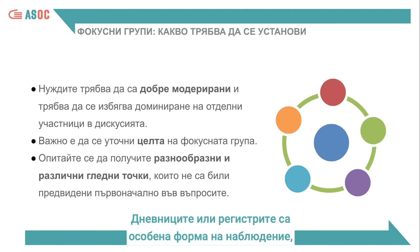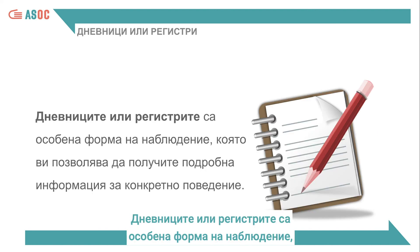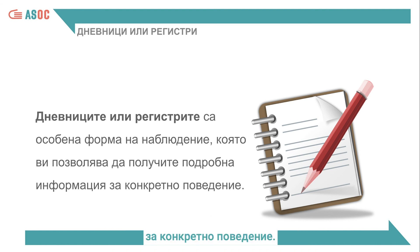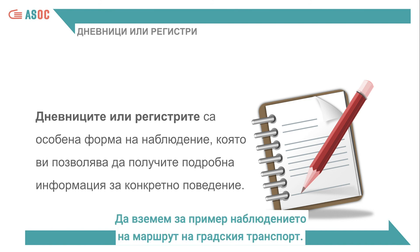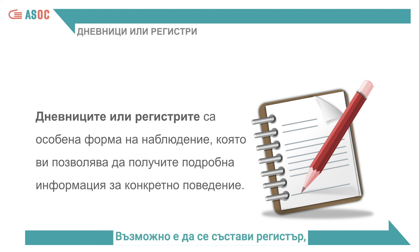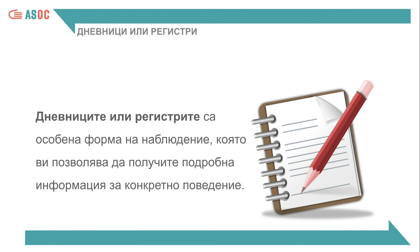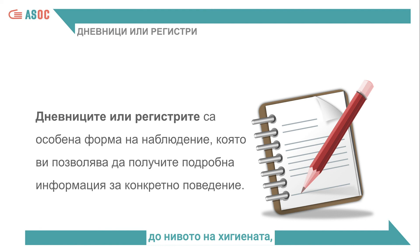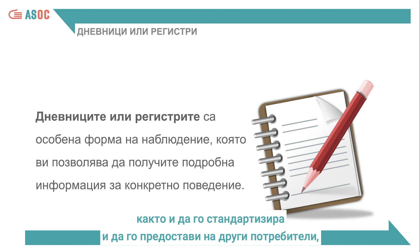Diaries or records are a particular form of observation that allow for the collection of very detailed information about a specific behaviour. For example, when observing a public transport route, it is possible to create and fill out a record to document the experience — from the waiting area, to how many people were waiting, to the level of cleanliness, the departure and arrival time, etc.